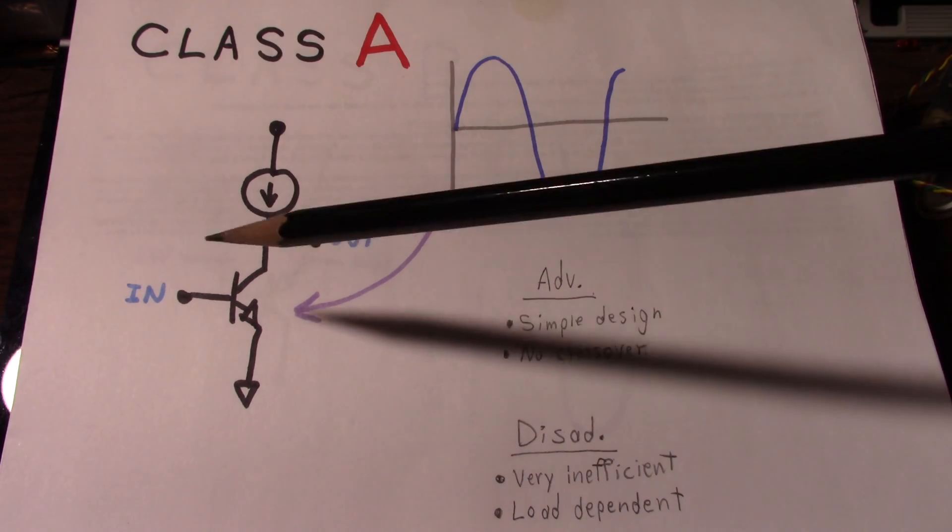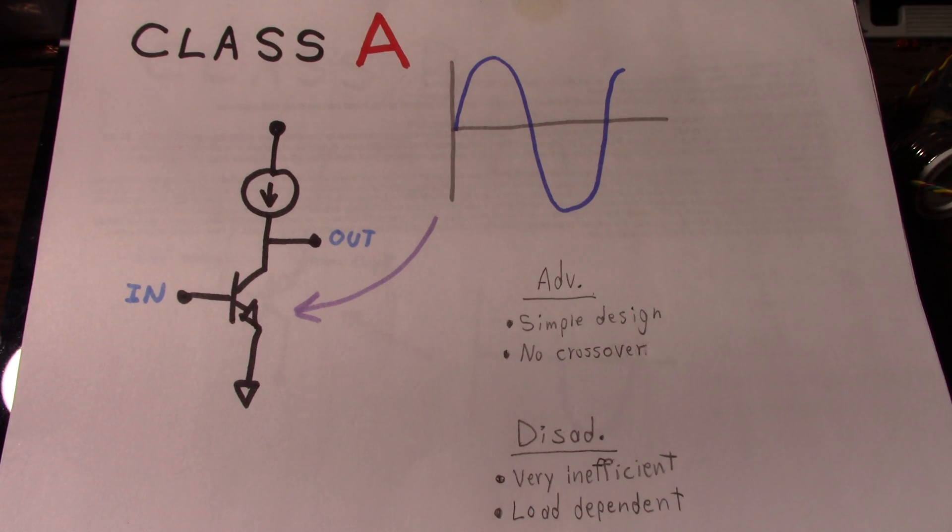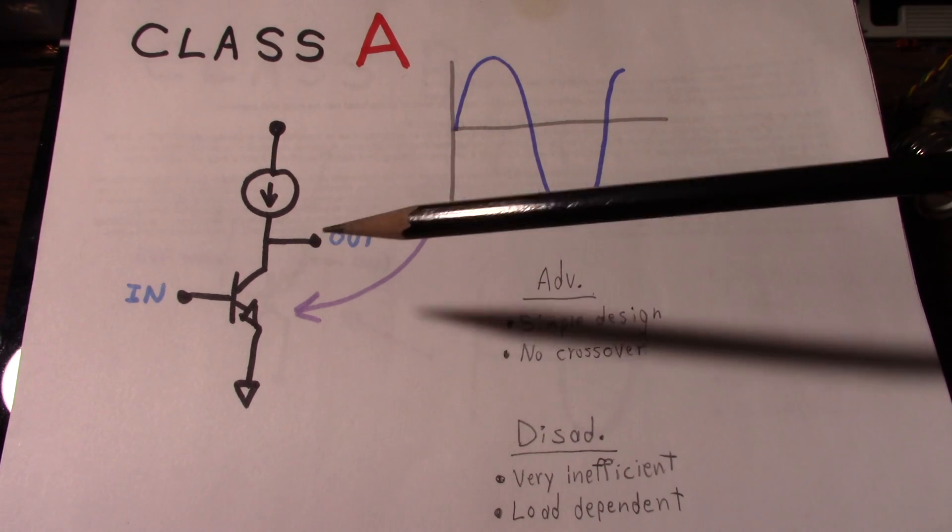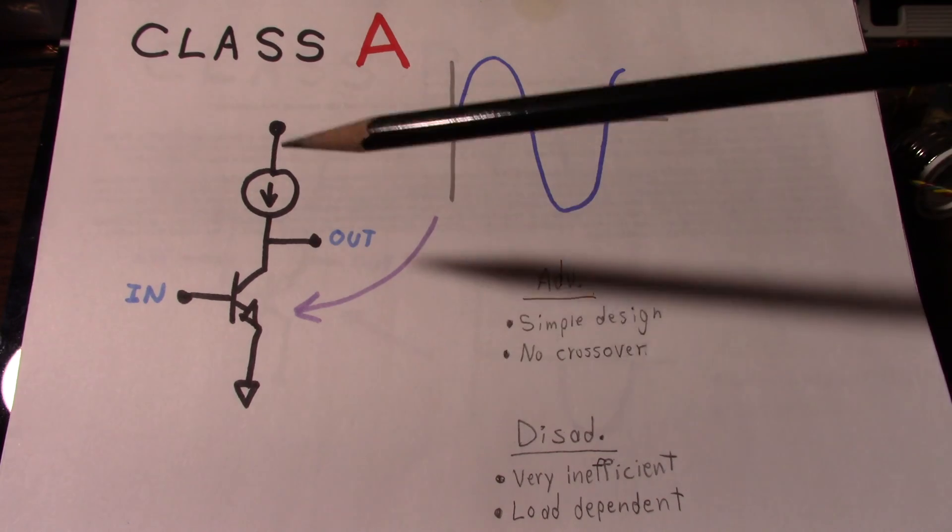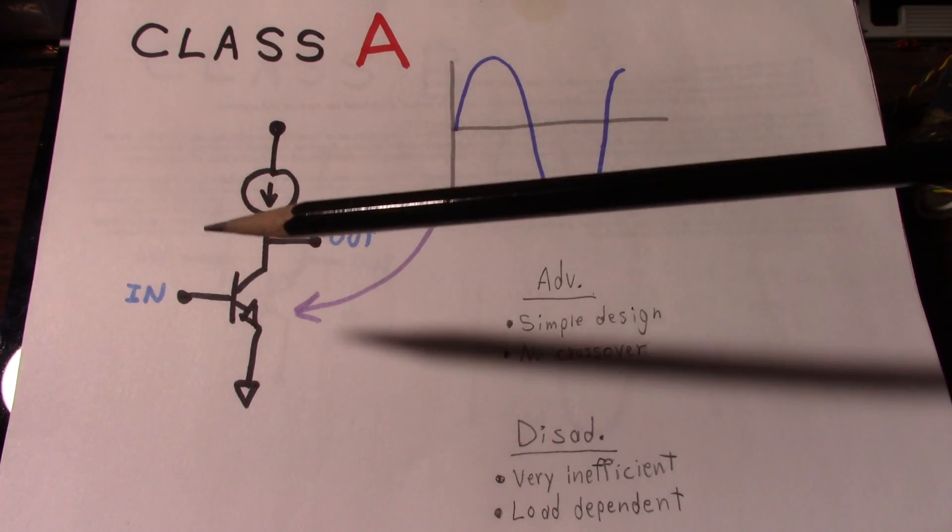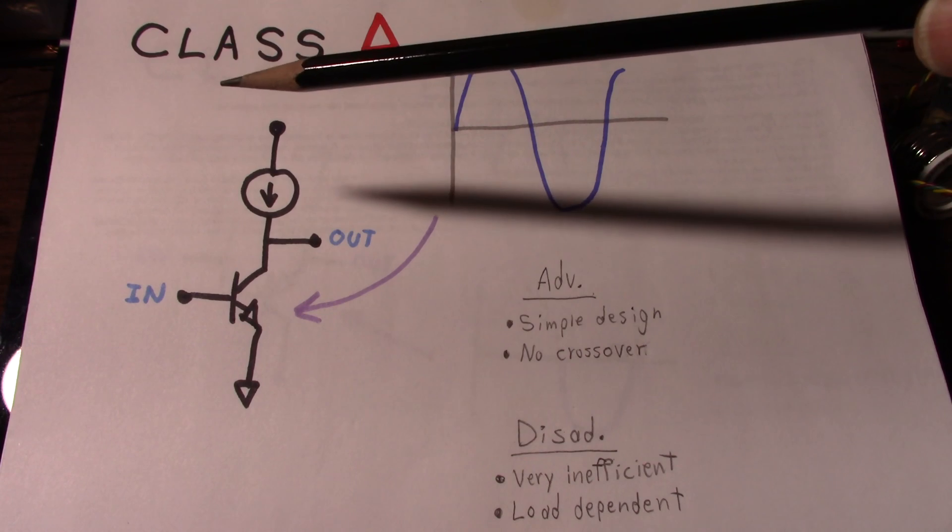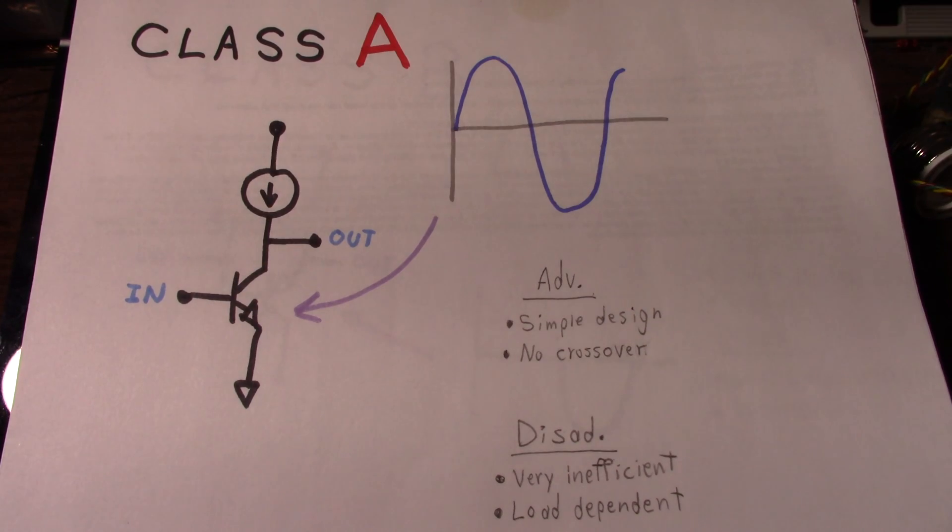And that's one huge drawback of the class A amplifier. Because you want it conducting for the full cycle of the waveform, you have to do some calculations for the output power you want. You know the load, determine the current, and you have to set up the output stage to draw that current continuously. So that results in a very inefficient amplifier. It's going to dissipate a lot of heat.